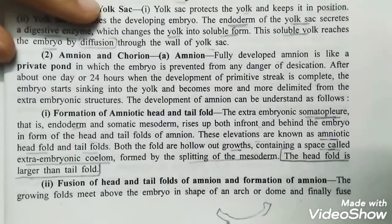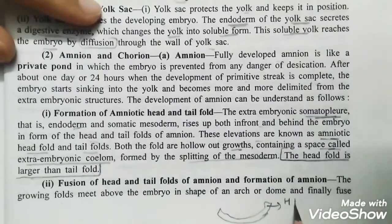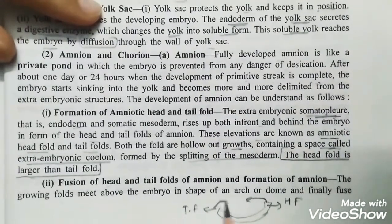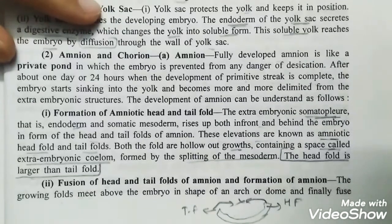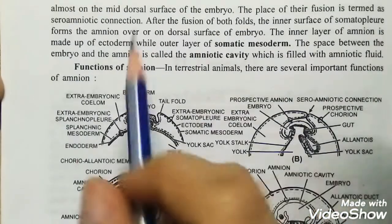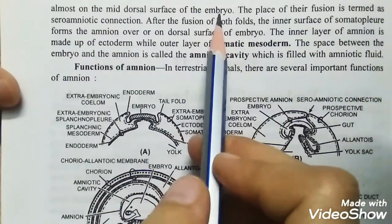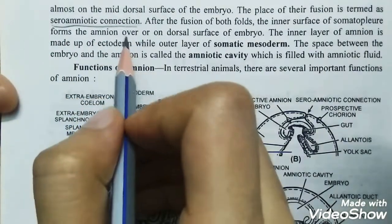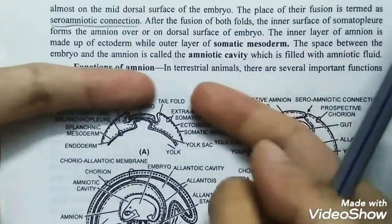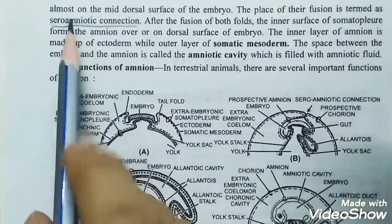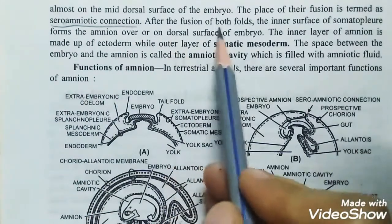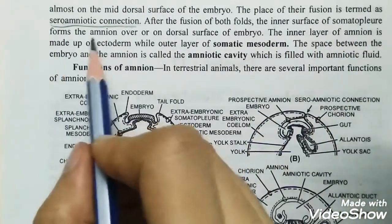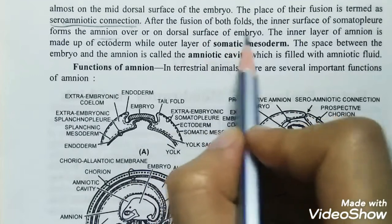Here is a fold and here is the embryo. This is called the head fold and the tail fold. These head and tail folds go up and fuse, almost to the mid-dorsal surface of the embryo. The place of fusion is called the sero-amniotic connection. After the fusion of both folds, the inner surface of somatopleur becomes the amnion, over and on the dorsal surface of the embryo.